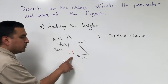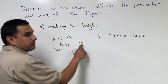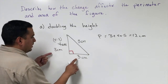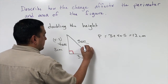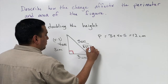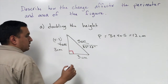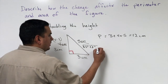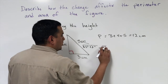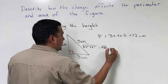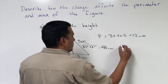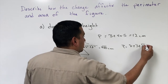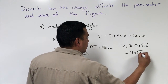Since this was a right triangle and the height is changing, that means the hypotenuse is going to change as well. I can use the Pythagorean theorem to solve this, so the hypotenuse is going to be the square root of 3 squared plus 8 squared, which is the square root of 64 plus 9, that's the square root of 73 centimeters. So the new perimeter is going to be 8 plus 3 plus the square root of 73, which is 11 plus the square root of 73 centimeters.